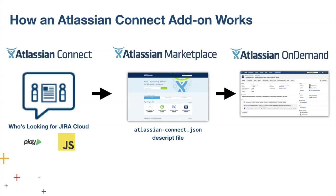So now you've actually got the thing built. How do we get this into your on-demand instance? How do you deploy it and get people using it? The way to do that is marketplace — marketplace is basically the glue between your Connect add-on and Atlassian On-Demand, either Jira Cloud or Confluence Cloud. You have to have a descriptor file — this atlassian-connect.json file describes and outlines what your application does and lets marketplace know how to deal with it. You're going to need to use marketplace even if you're using this for internal use, because it's how on-demand talks to your add-on.